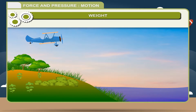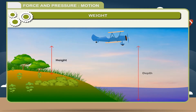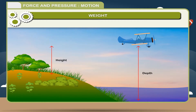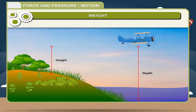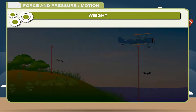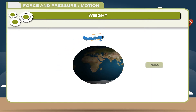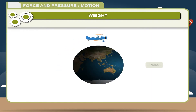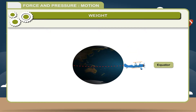Weight varies with respect to the height and depth from the earth's surface. The weight of an object starts decreasing as it moves higher above or deeper below the earth's surface. Even on the earth's surface, the weight of an object may vary from place to place. Its value is minimum at the poles and maximum at places lying on the equator.